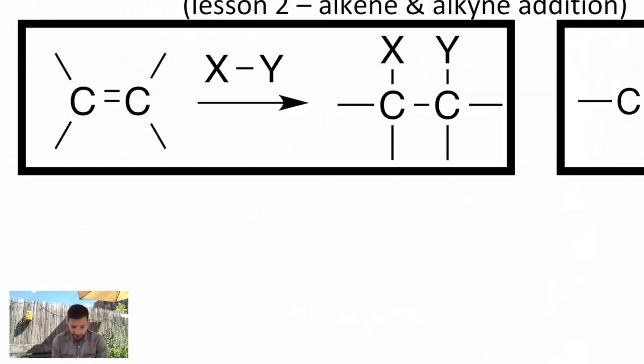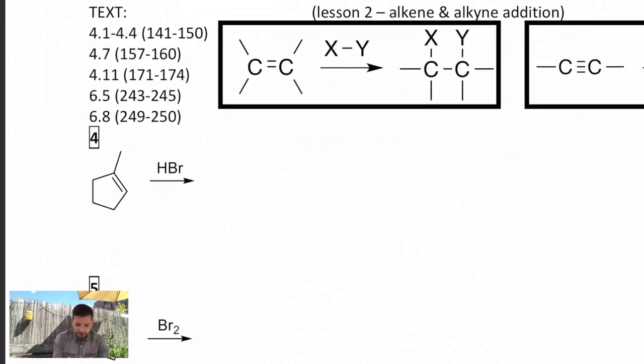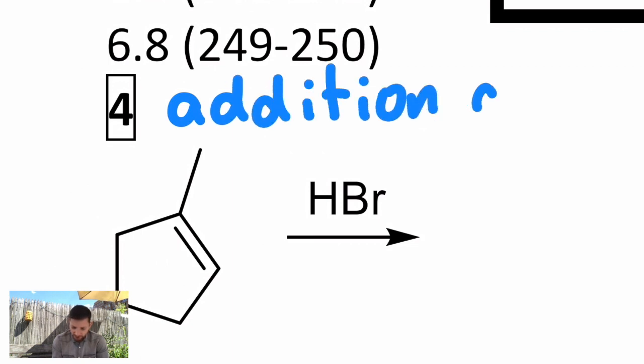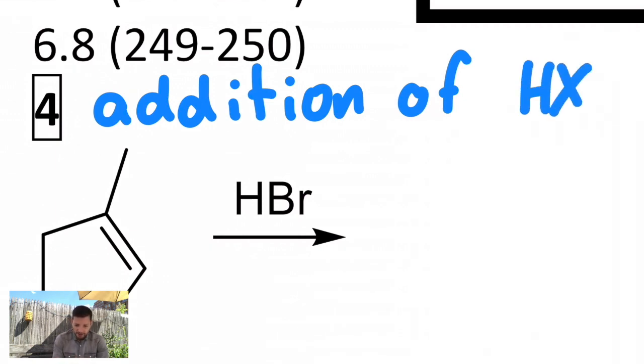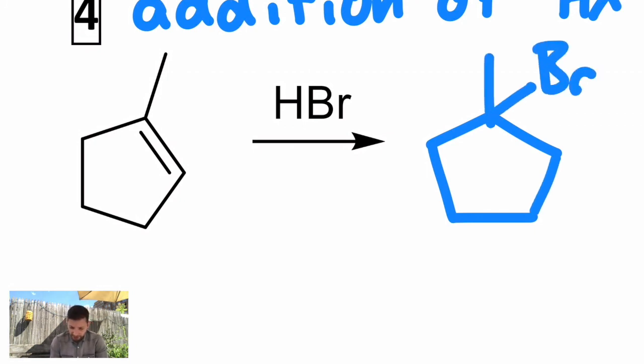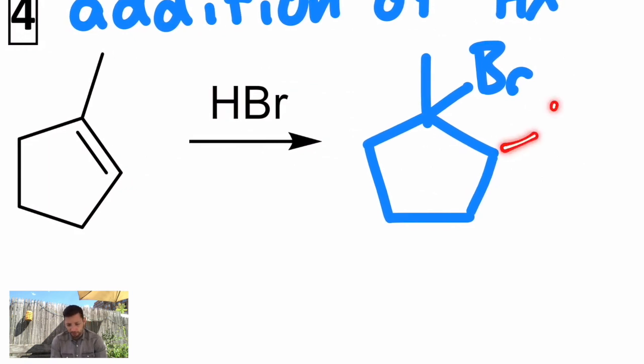Let's look at a handful of reactions. Starting with addition of HX, for example, HBr. If I react methylcyclopentene with HBr, you lose the pi bond, you get a bromine on the more substituted carbon, and you actually get a hydrogen on the less substituted carbon. But I'm not going to draw it because it's a line structure.